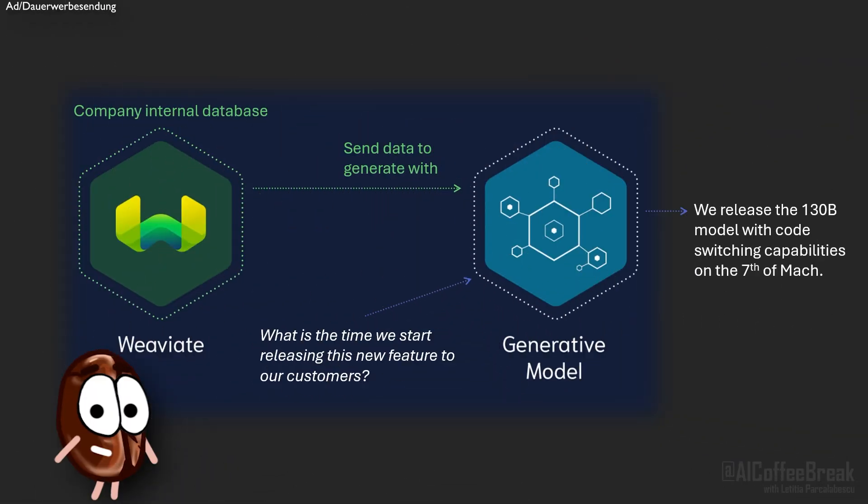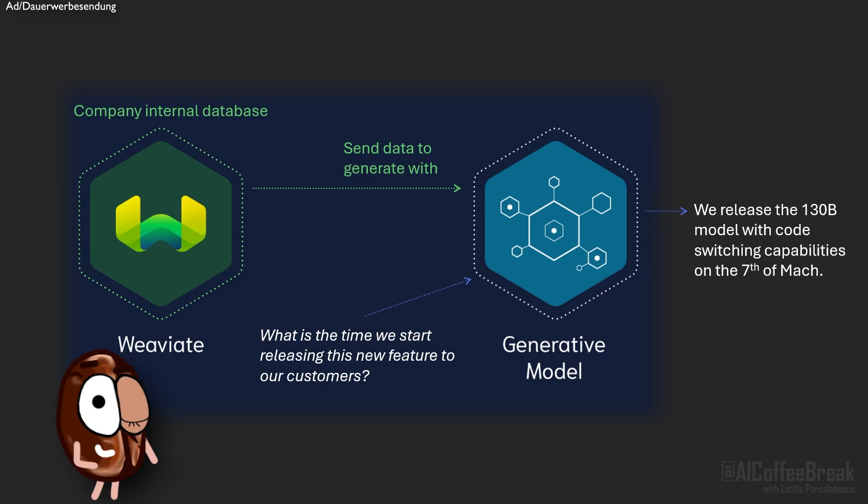Unlike an LLM that has been trained on data up to a certain date — containing information only up to April 2023, for example — a database can contain real-time information. With RAG we can continuously update the language model with the latest data, bypassing the limitation of its limited encoded knowledge. To make the LLM generate outputs based on the provided information only, we can use prompt engineering tactics like 'please base your response only on the provided information.' To make this retrieval process efficient, we need a vector database and vector search, which are offered by Weaviate, and it's open source.